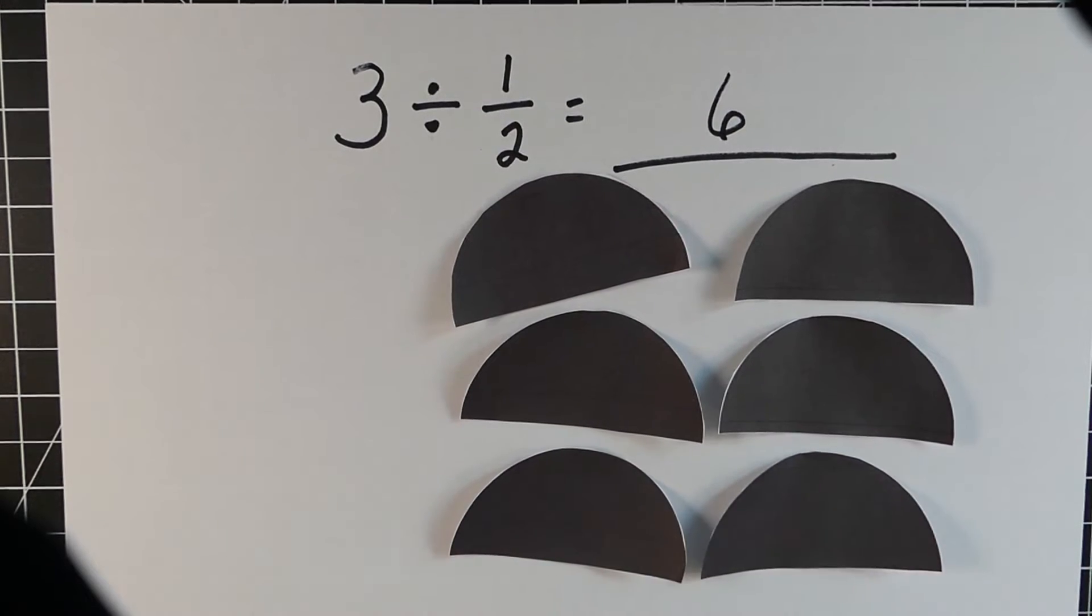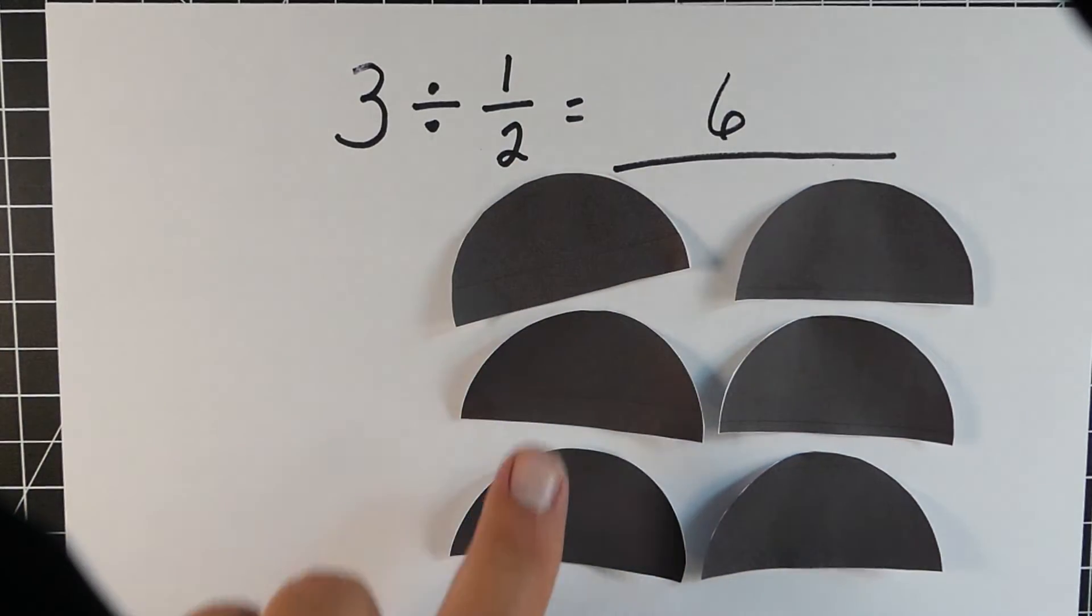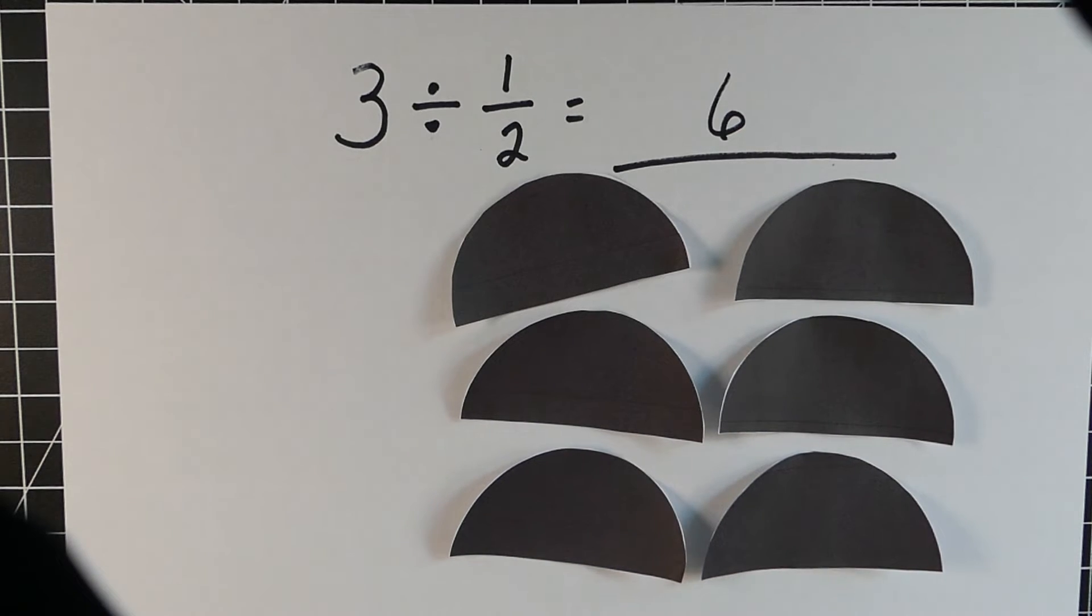So again we're taking a number, dividing it, and getting a larger amount. In this case, 6. And you can see those 6 half circles right there.